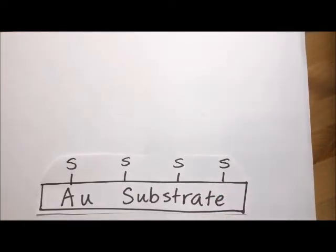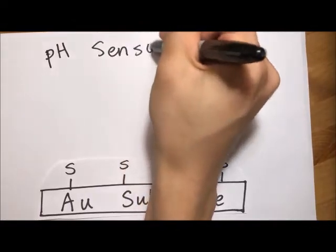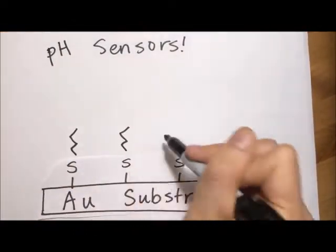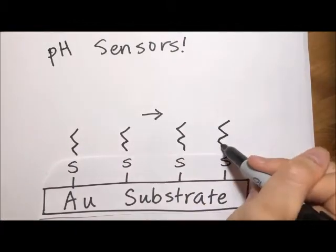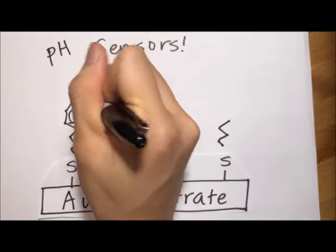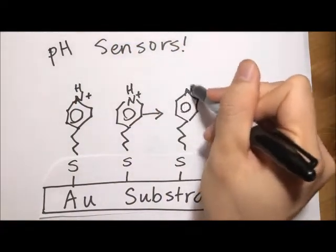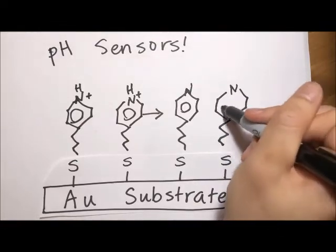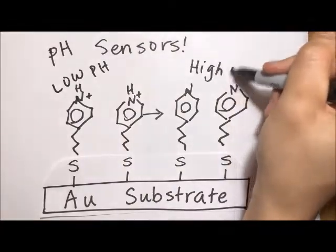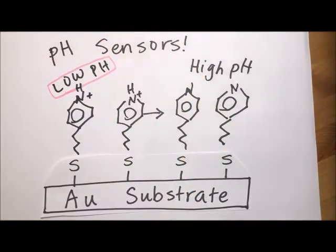Another type of sensor that you can use with these SAMs is attaching a molecule called 4-mercaptopyridine, which undergoes protonation at a higher pH. This sensor works because with all SAMs, there exists an interfacial capacitance. When the pyridine group protonates at higher pH, the dielectric constant of the monolayer actually decreases, which means you have a lower capacitance, which then can be measured, ultimately translating a change in pH to a change in measurable capacitance.